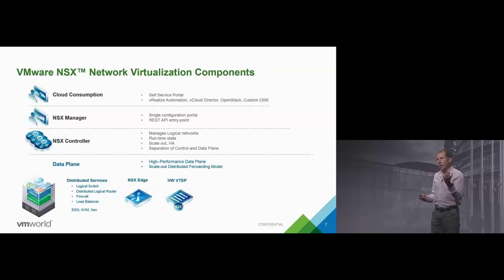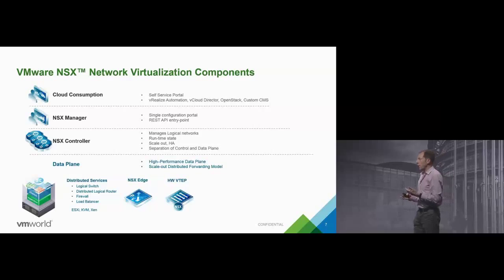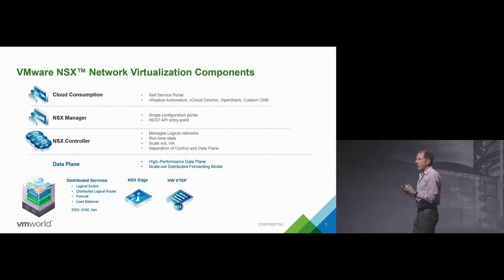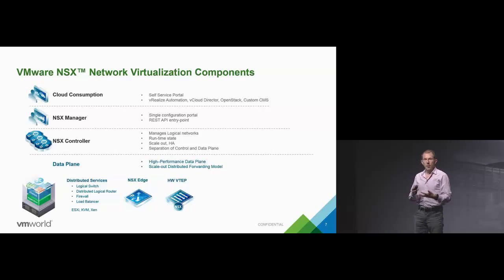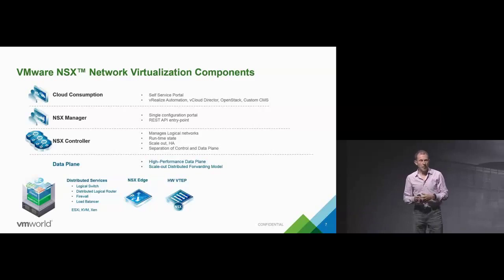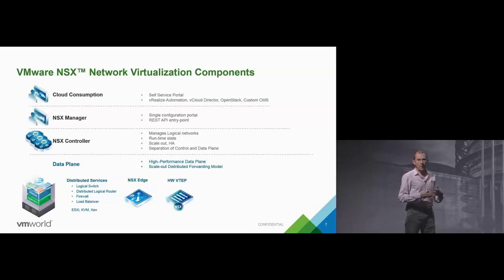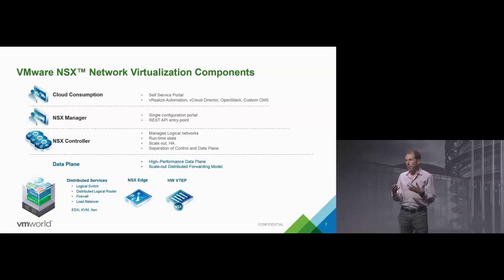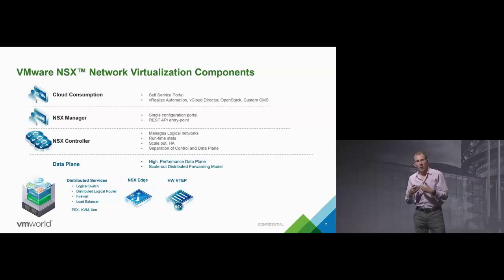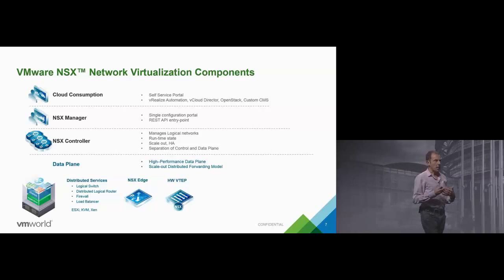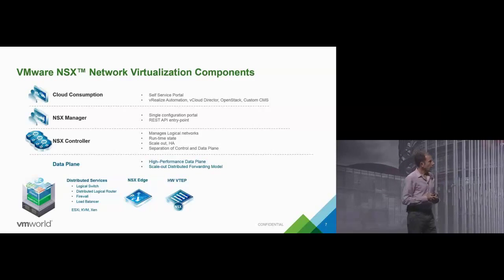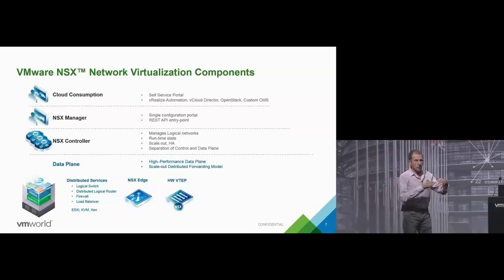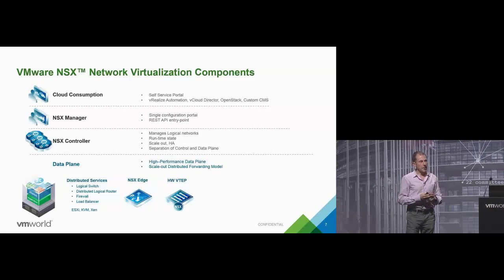Sitting on top of that we have the NSX Manager — the place where a human normally interacts with the system. It provides a GUI so you can specify what a virtual network should do, monitor it, look at statistics, and it also provides an entry point for APIs from other systems. Fundamental to the idea of automation is that you can send a request to a single point and get a virtual network instantiated, even though that network might span multiple data centers and require touching tens or hundreds of hypervisors.